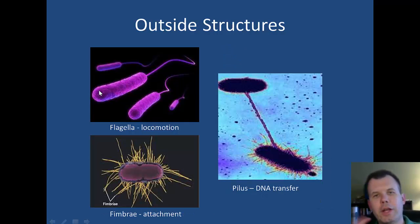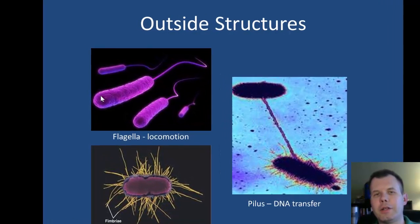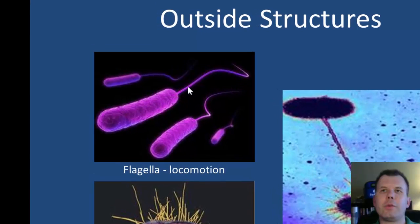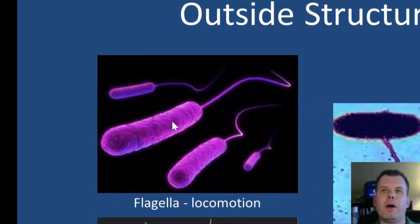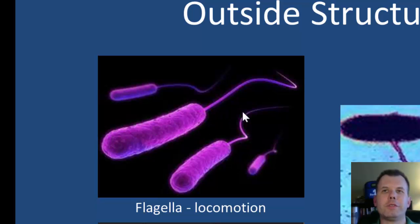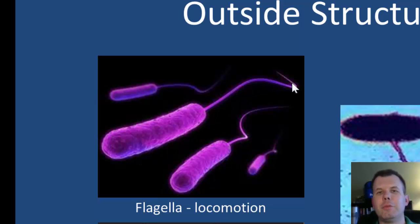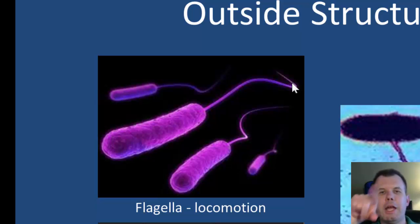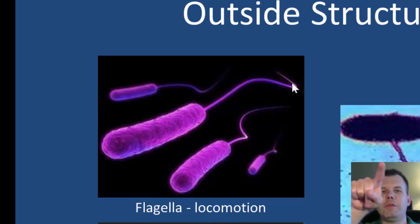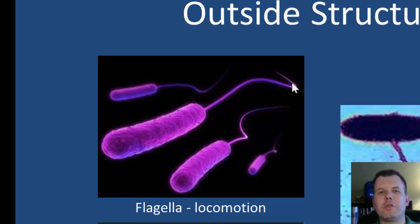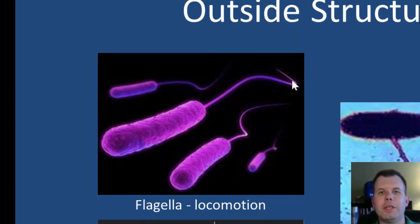If we look at some of the outside structures — most of the interesting stuff in bacteria is found on the outside. One structure we see is flagella. Flagella can be found as one long tail, multiple flagella, or two flagella depending on the bacteria. These are structures that allow bacteria to move — they spin their flagella like a little propeller, similar to a motorboat or airplane propeller. That allows them to go forward, stop, tumble, and move in different directions. This is their locomotion, driven by taxes toward light or chemicals.